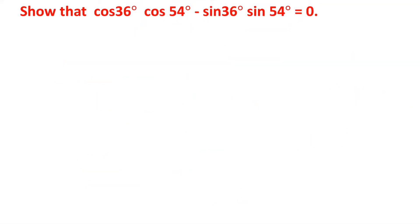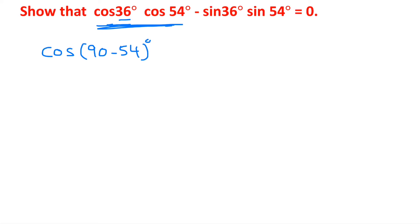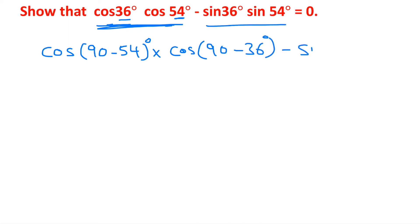Now we need to show that cos(36°) × cos(54°) - sin(36°) × sin(54°) equals 0. We will convert some angles to sine using complementary angle identities. For cos(36°), we can write it as cos(90° - 54°), and we leave sin(36°) as it is.